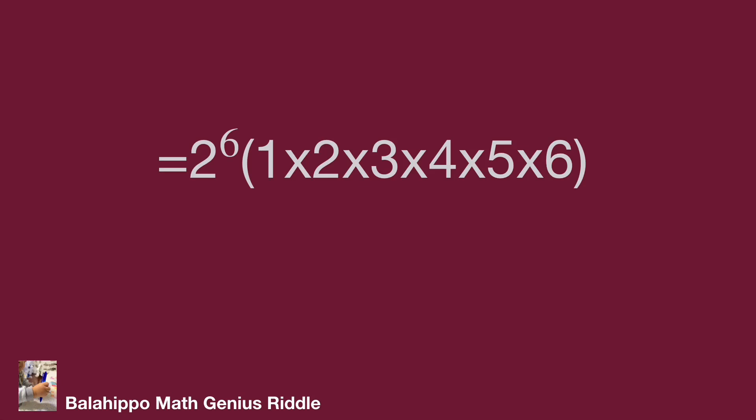And 1 × 2 × 3 × 4 × 5 × 6 equals 6 factorial. Since 2⁶ is already a perfect square, if we divide by 6 factorial the entire expression becomes a perfect square. So n factorial equals 6 factorial, meaning n equals 6. That's the answer.